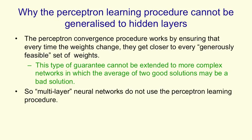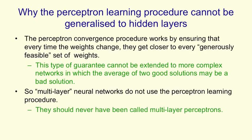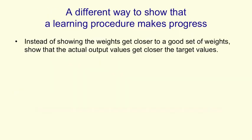And to prove that when they're learning something is improving, we don't use the same kind of proof at all. They should never have been called multilayer perceptrons — it's partly my fault, and I'm sorry. For multilayer nets, we're going to need a different way to show that the learning procedure makes progress.